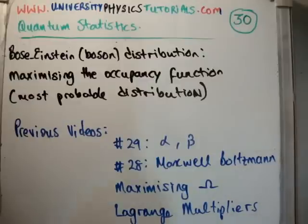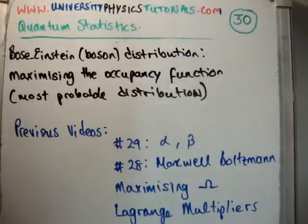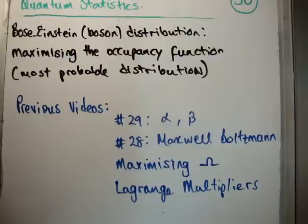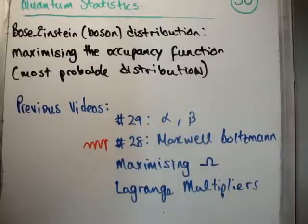I'd also like to note that I have a website now: universityphysicstutorial.com. The previous videos to this are numbers 29, where I got the formulas for alpha and beta, and 28, which is the most detailed of my videos on this topic — where I fully derived the Maxwell-Boltzmann distribution function, spoke about maximizing the multiplicity, and also did a small bit on Lagrange multipliers. So if you're stuck on anything in this video, you should watch number 28, where I did everything quite step by step.